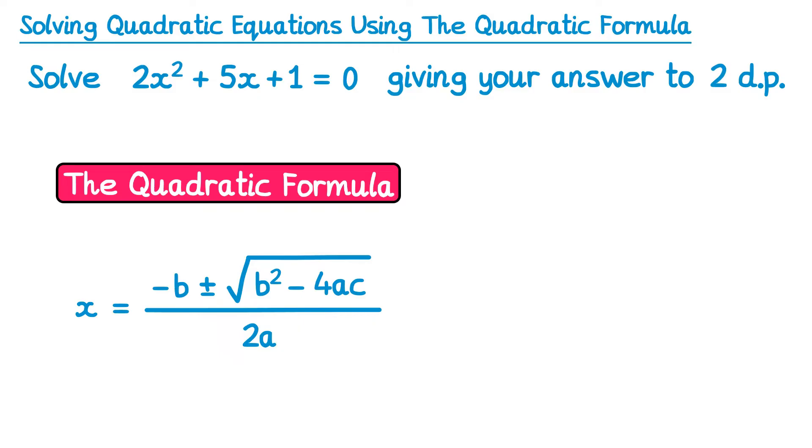But what do a, b and c actually mean? When we write a quadratic equation out we tend to write it in this form, ax squared plus bx plus c equals zero. What that means is the number in front of the x squared would be a, so in this one a would be 2. The number in front of the x would be b, so in this case b would be 5. And the final term at the end, the constant, would be c, so in this case c would be 1.